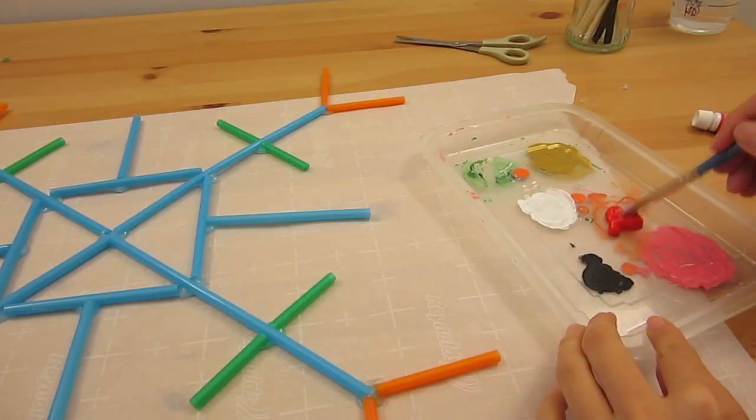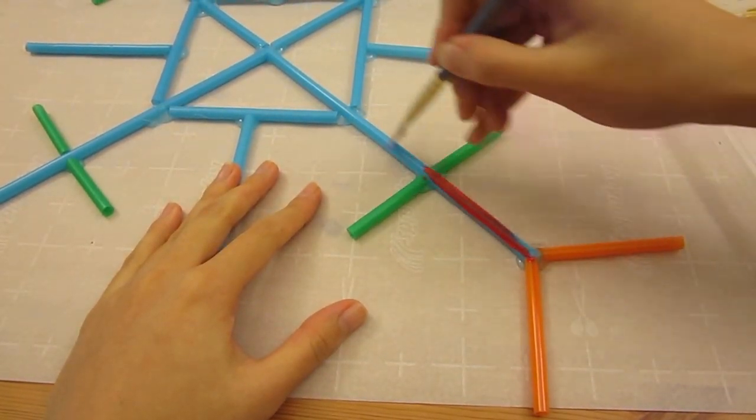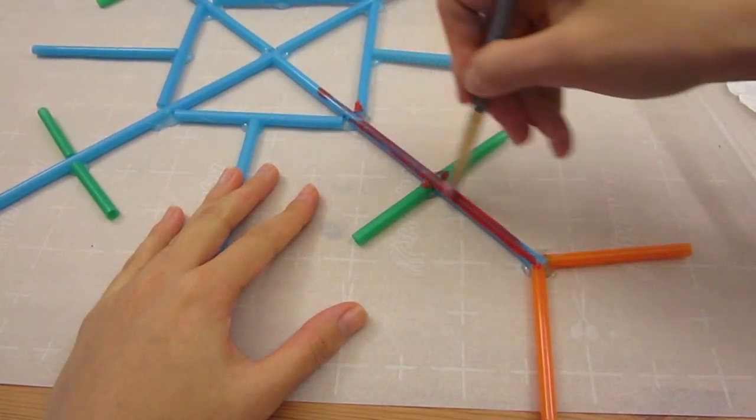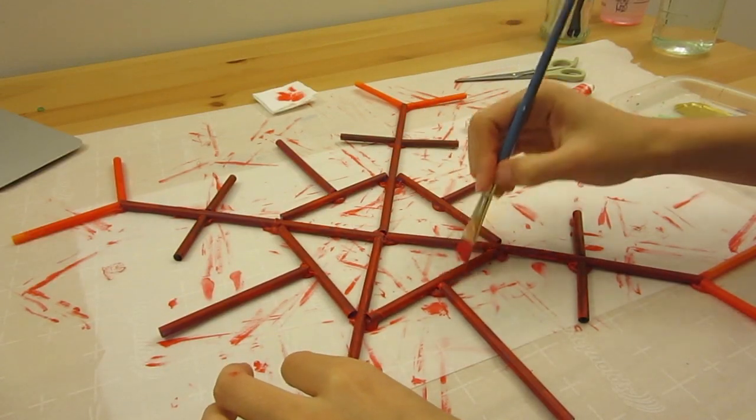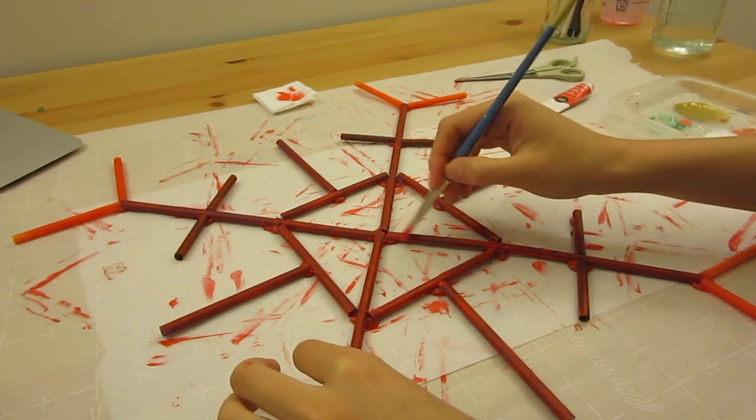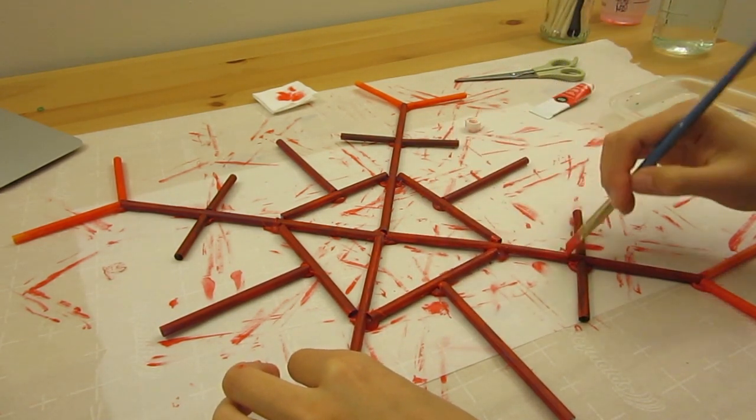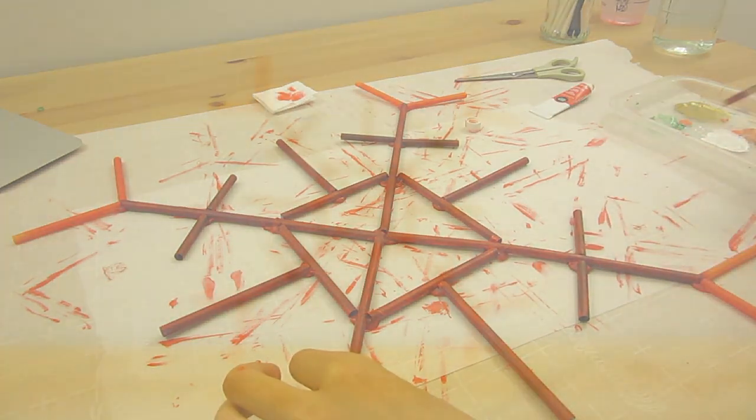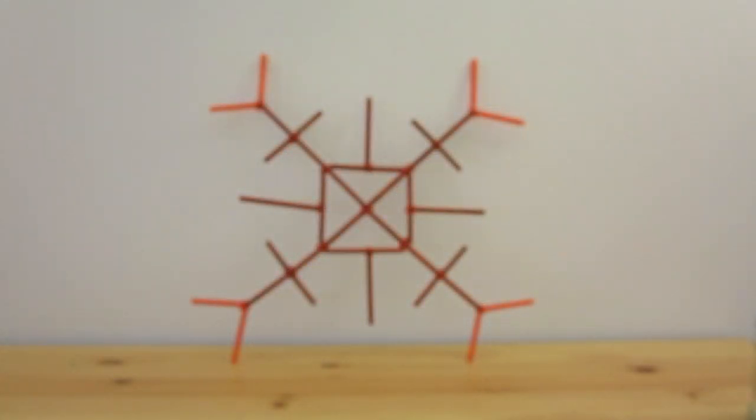With some acrylic paint, I went ahead and painted the whole thing two coats of red. I think other colors like gold or white will look great as well. Give it some time to dry in between each coat of paint. Spray paint will also work great as well. And there you have your snowflake.